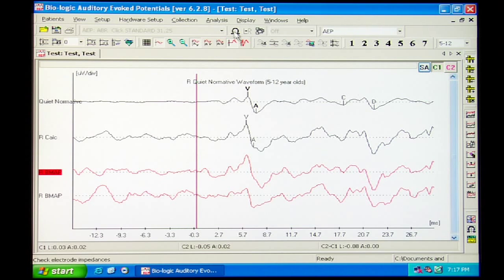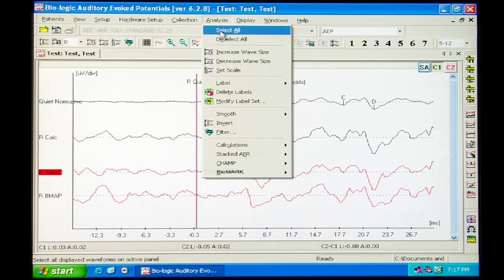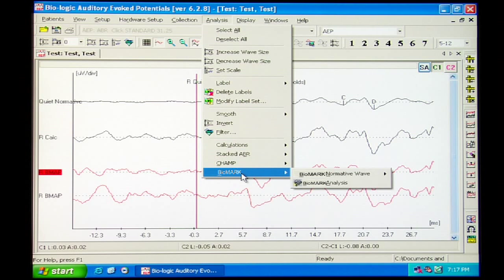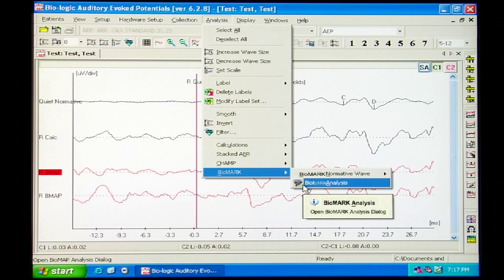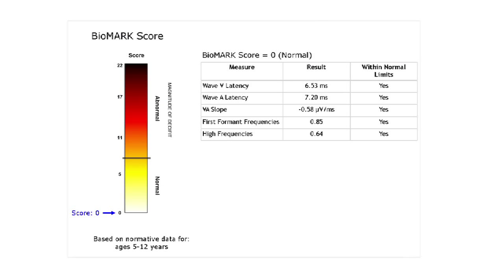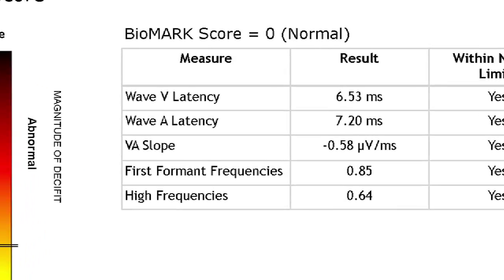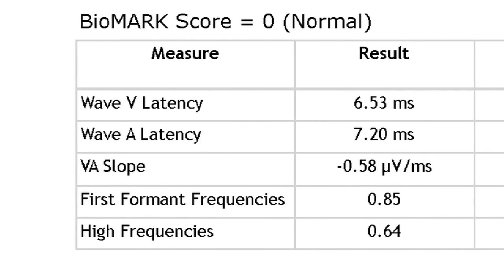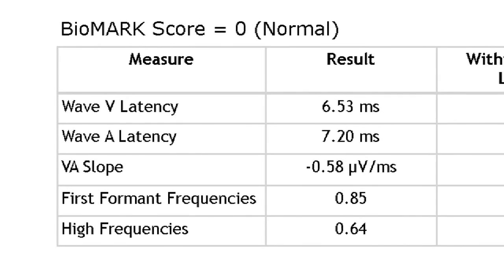You are now ready to perform the automatic Biomark analysis. Choose the Biomark analysis option from the analysis menu. The following screen will appear. The Biomark results are based on five measures: the timing of waves 5 and A and the slope between them. The last two measures are derived from a spectral analysis of the response. They correspond to the brainstem representation of the frequencies that are important for speech sound discrimination.